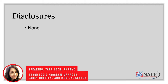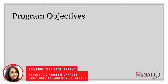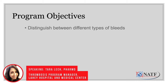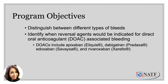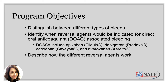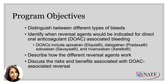Thank you for having me. I have nothing to disclose. So let's go ahead and review the program objectives for today. The hope is that by the end of this program, you'll be able to distinguish between different types of bleeds, identify when reversal agents would be indicated for a direct oral anticoagulant — which we will now refer to as a DOAC-associated bleeding — describe how the different reversal agents work, and discuss the risks and benefits associated with DOAC-associated reversal.